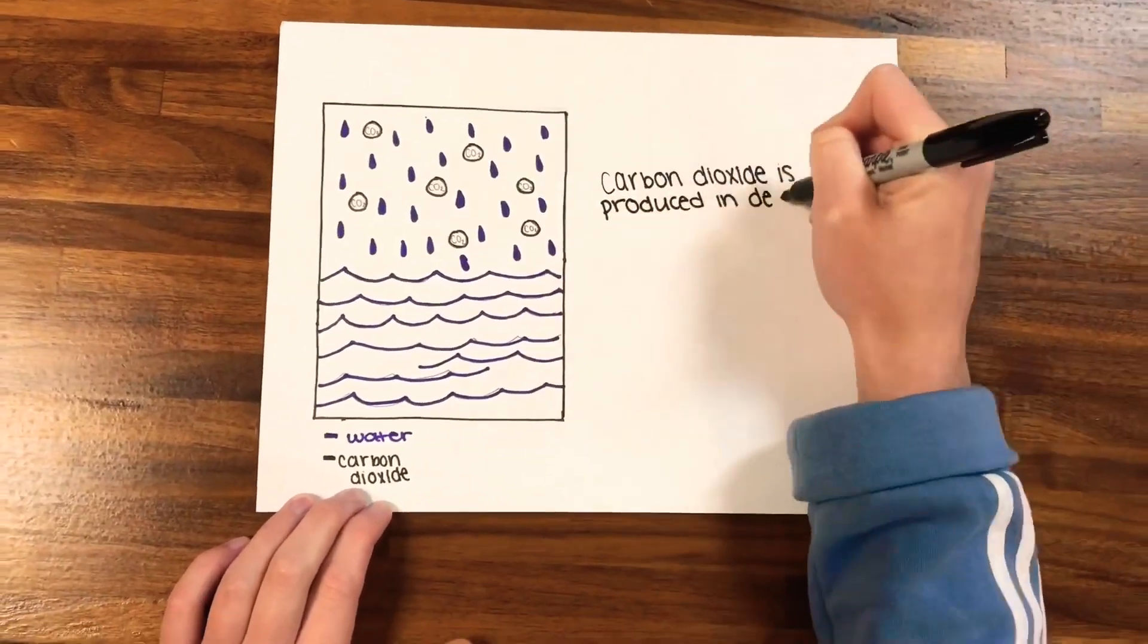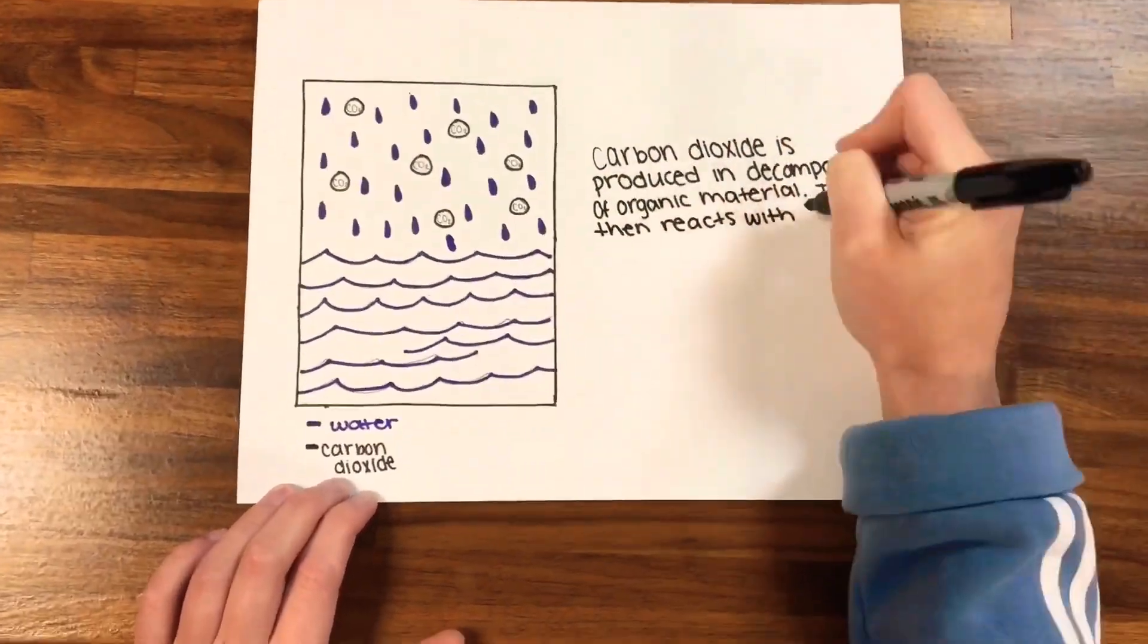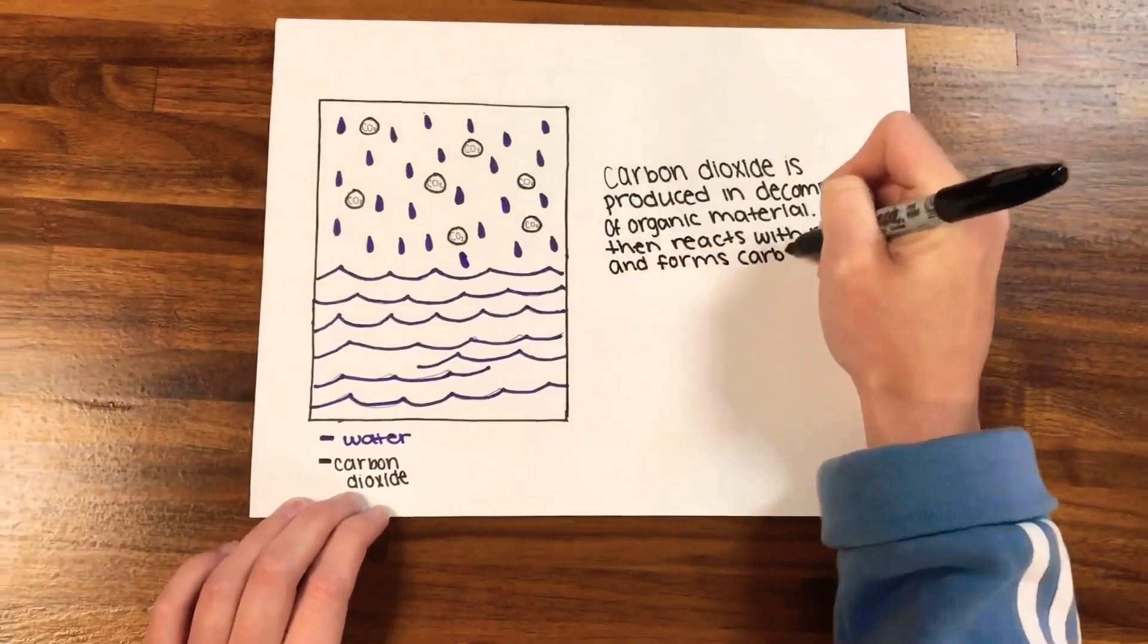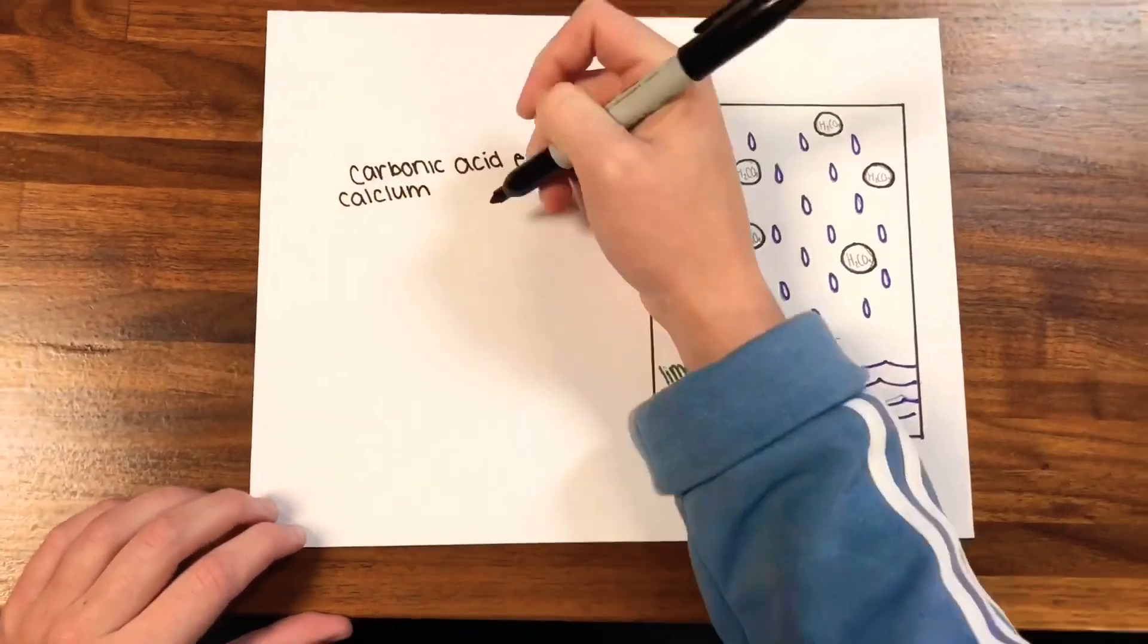Carbon dioxide is produced in the decomposition of organic material and then reacts with rainwater and forms carbonic acid. Carbonic acid extracts calcium from rocks such as limestone.